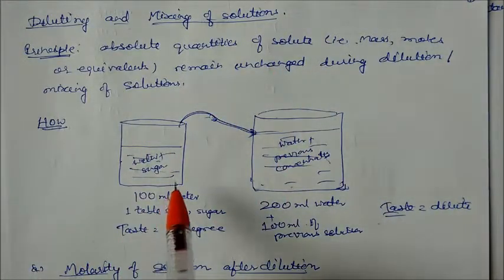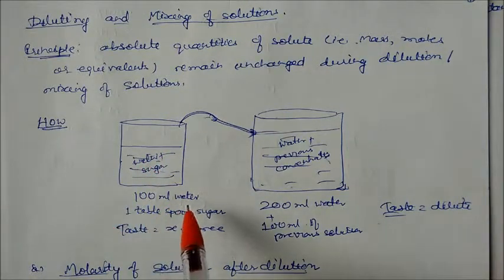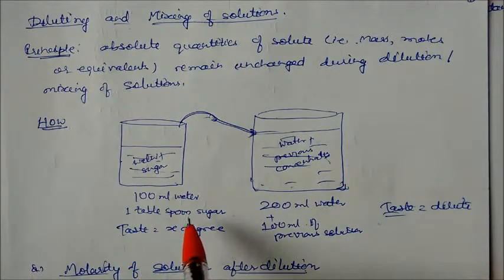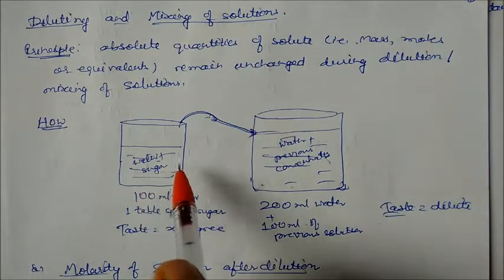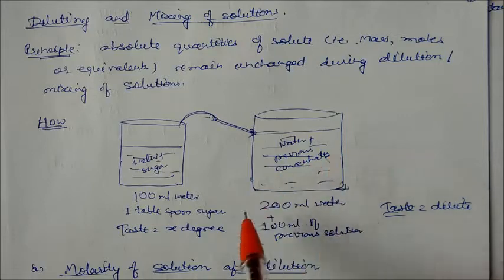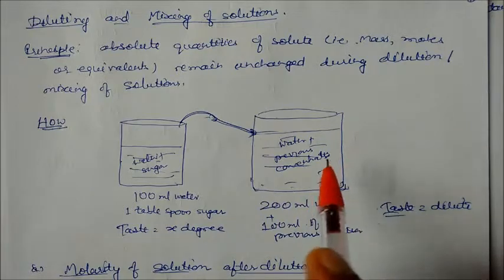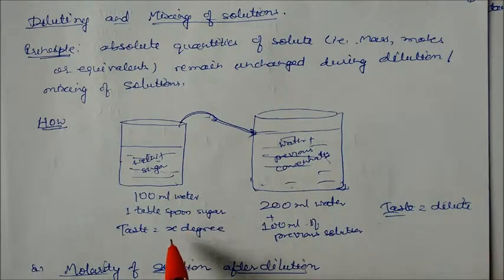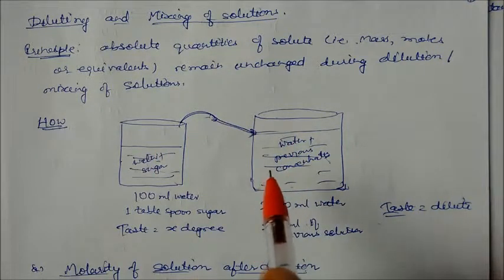Let me give one example. Take a beaker or container with 100 ml of water. Drop one tablespoon of sugar into it and dissolve it. After dissolving, the solution will have some taste — let's say that taste is some degree X. Now take another beaker with 200 ml of pure water, and drop this whole 100 ml sugar solution into it and mix.